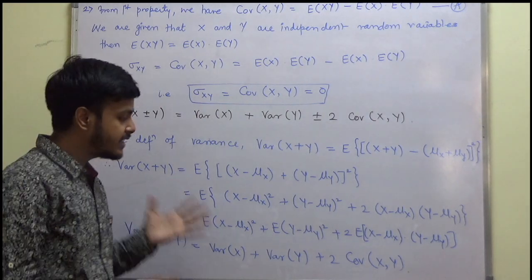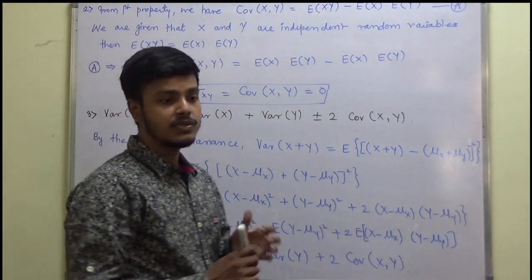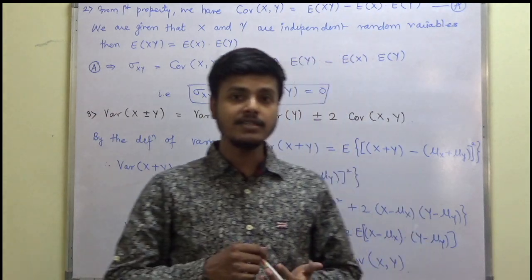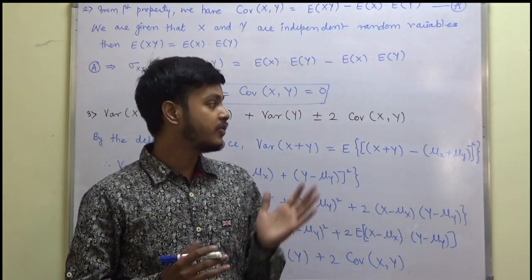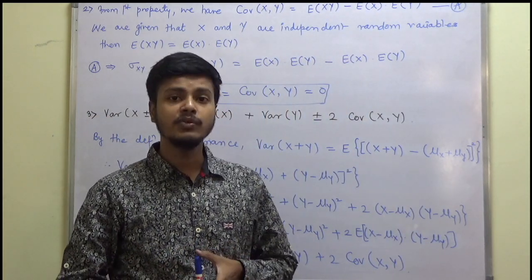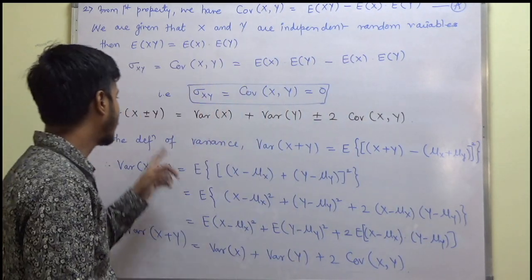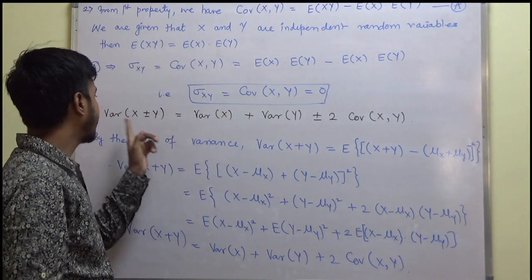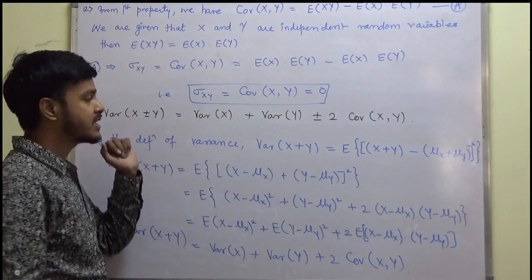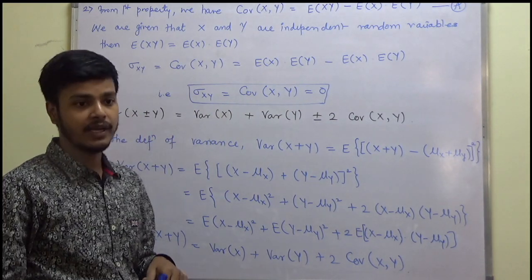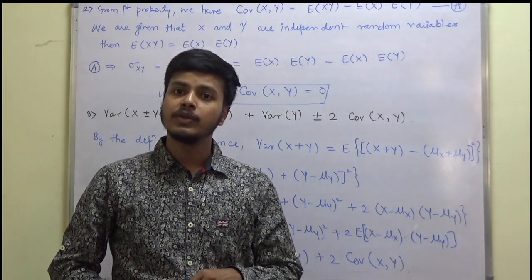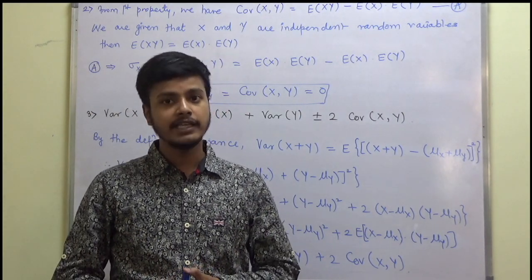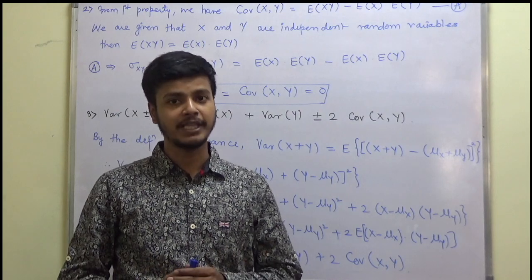We have seen these very simple properties of covariance. I hope this is clear to you. I want you all to go and prove the remaining property, that is variance of (x minus y). Thank you for watching this learning video — enjoy learning mathematics.